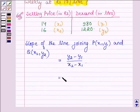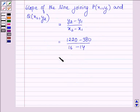which is 1220 minus 980 upon 16 minus 14, and this is further equal to 240 upon 2 which is equal to 120.